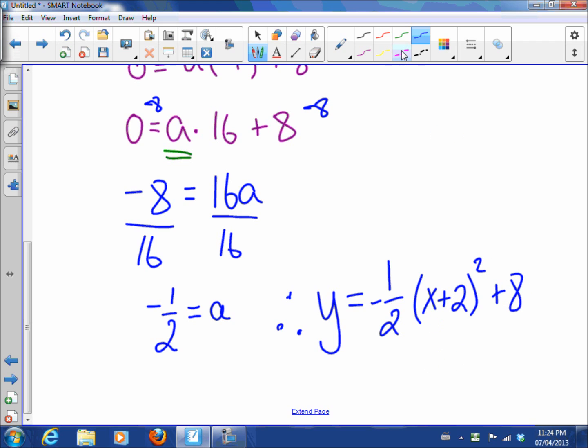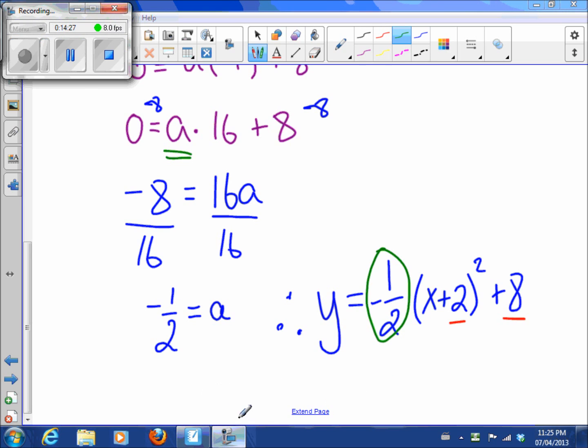So the bottom line is we were given the vertex first and then we were given another point to be able to figure out that a value. That's it. See you in class.